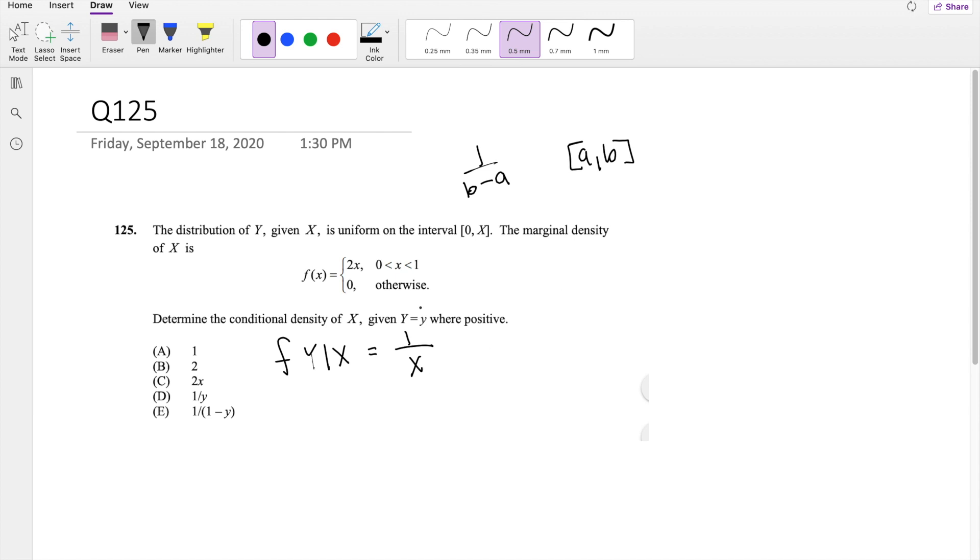And the marginal distribution function of X is here, so f(x) is equal to 2x. And then they say, determine the conditional probability density of X. Find the density of X given Y is equal to some little y.